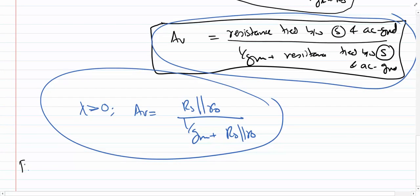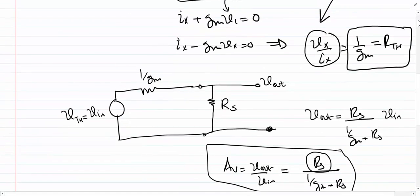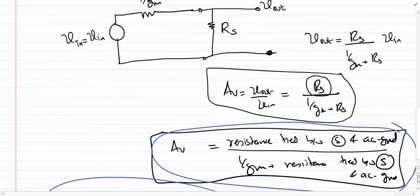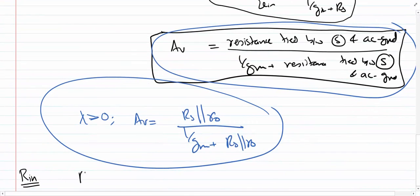Let's now try to find the input impedance of the source follower. Going back to the first figure, we can see that the gate terminal draws very little current at low frequencies. So we can say that the input impedance is going to be very high at low frequencies.